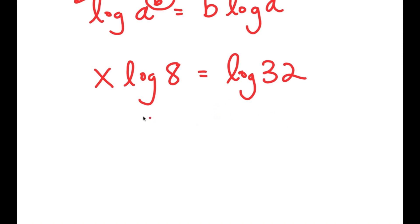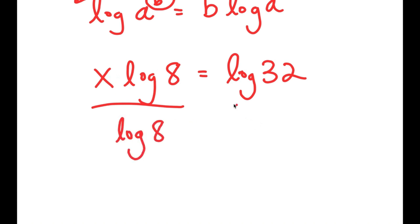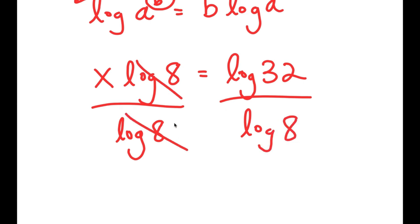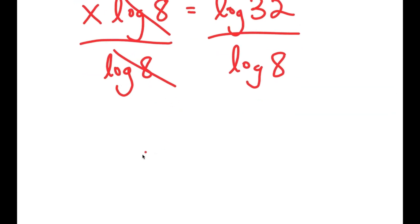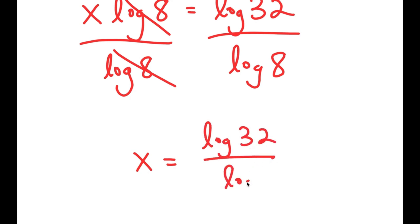From here, I'm going to divide both sides by log 8, because we want to isolate x — that's what we're trying to find the value of. These two cancel out and I get x is equal to log of 32 over log of 8.